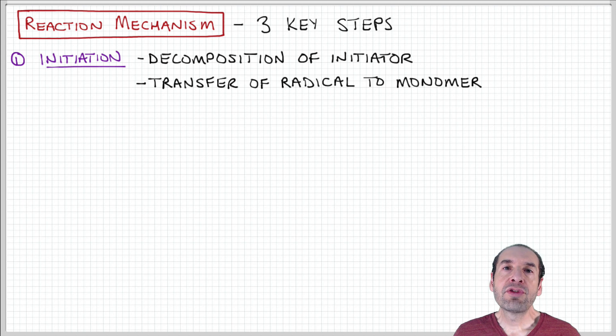Chain growth polymerization, and in particular free radical polymerization, which is the variation that we're focusing on here, involves three key steps, and those are initiation, propagation, and termination. So I'm going to walk you through each of those three steps here in general, and then we'll do a more detailed analysis a little bit later when we develop our kinetic model.